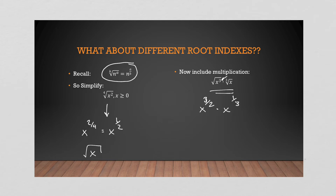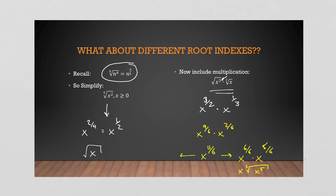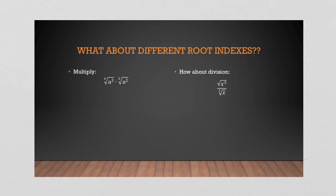Now this is manageable — we just need a common denominator. The common denominator is six, so we get x to the nine over six times x to the two over six, which gives us x to the eleven over six. We can break that up into x to the six over six times x to the five over six, which means we have x times the sixth root of x to the five. Alternatively, the sixth root of x to the eleven, where x to the eleven is x to the six times x to the five — that part cancels and comes out.